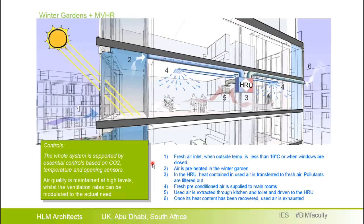Here is a scheme of the simple integration of the two systems. On the left hand side, fresh air is taken into the winter garden, preheated, and then led directly to the heat recovery unit where heat is recovered from used air, and then fresh air is supplied to the rooms. To simulate this, we use two modules in IES: Microflow and Apache HVAC.